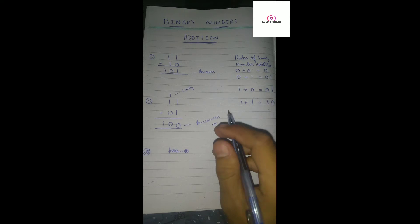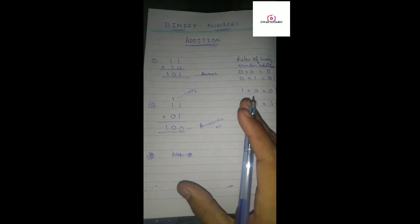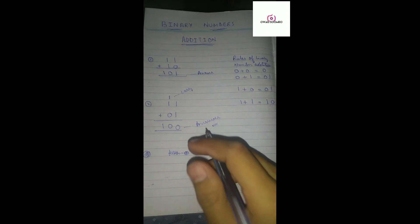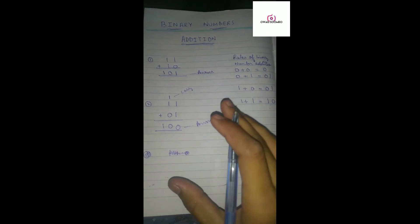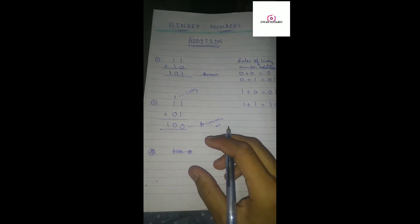So these are some of the rules, how to add binary numbers. This is the simplest way. If you want to know any other question or if there is any confusion, you can ask in the comments. OK.